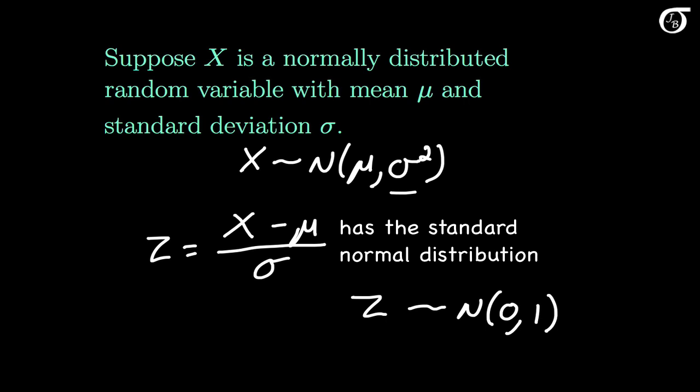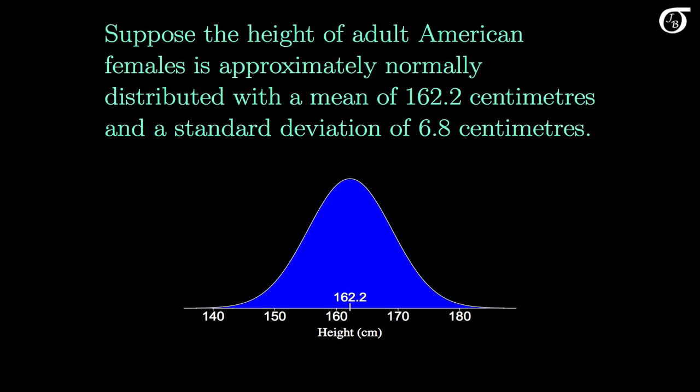Now let's take a look at how we might use this in probability calculations. Suppose the height of adult American females is approximately normally distributed with a mean of 162.2 cm and a standard deviation of 6.8 cm. This is close to reality as estimated by national health statistics. And that distribution looks like this, with the mean of 162.2 right in the middle.